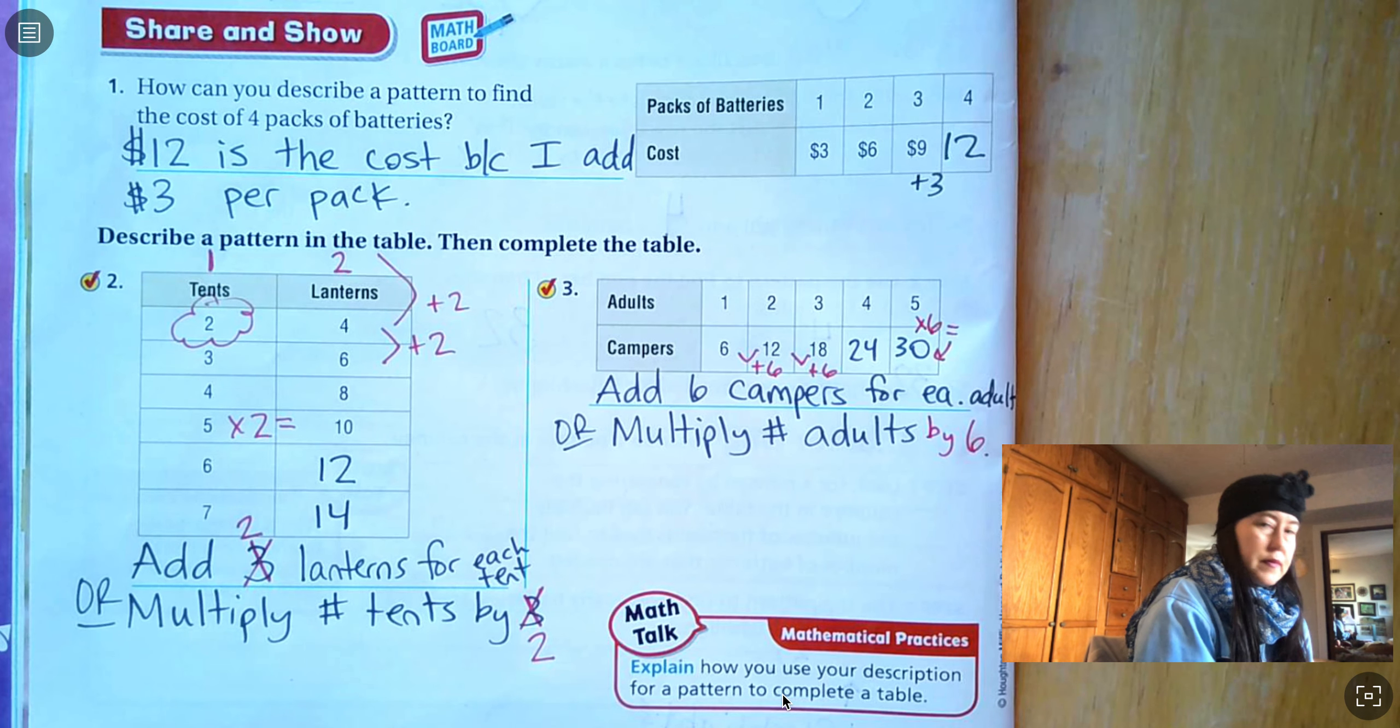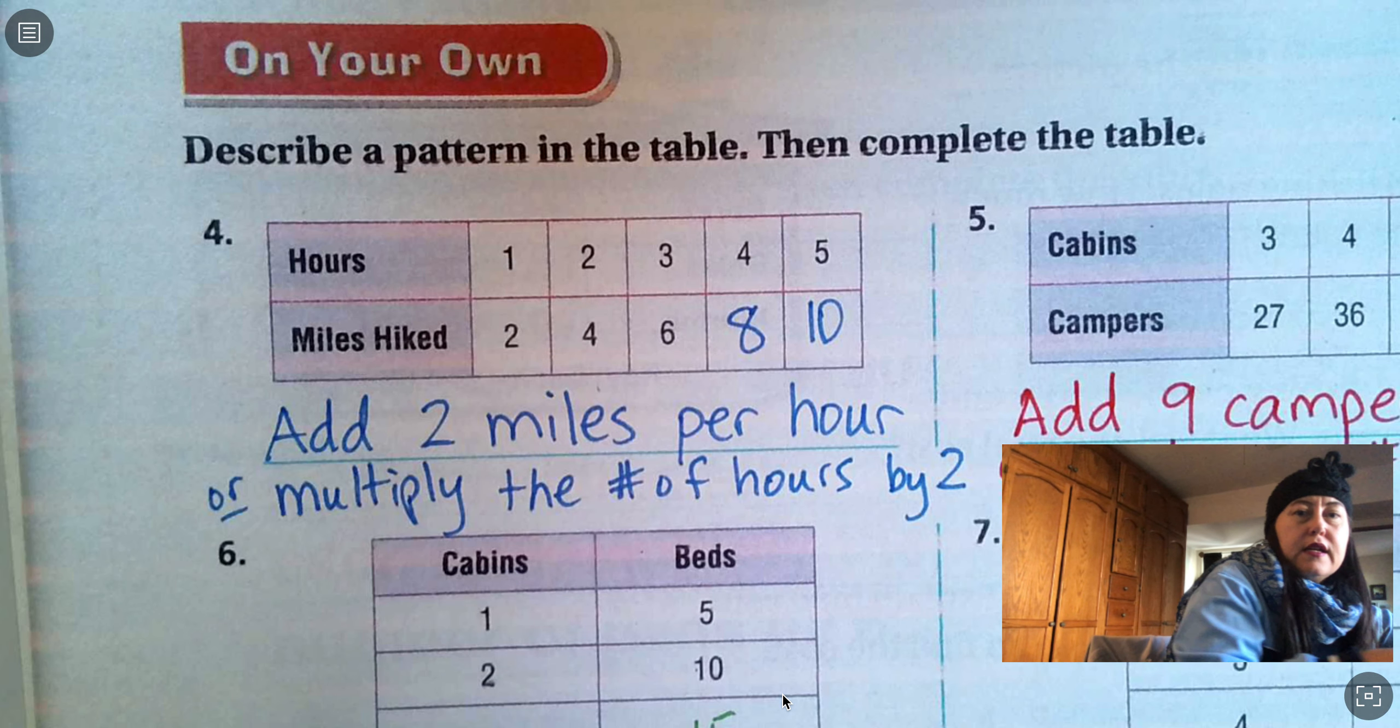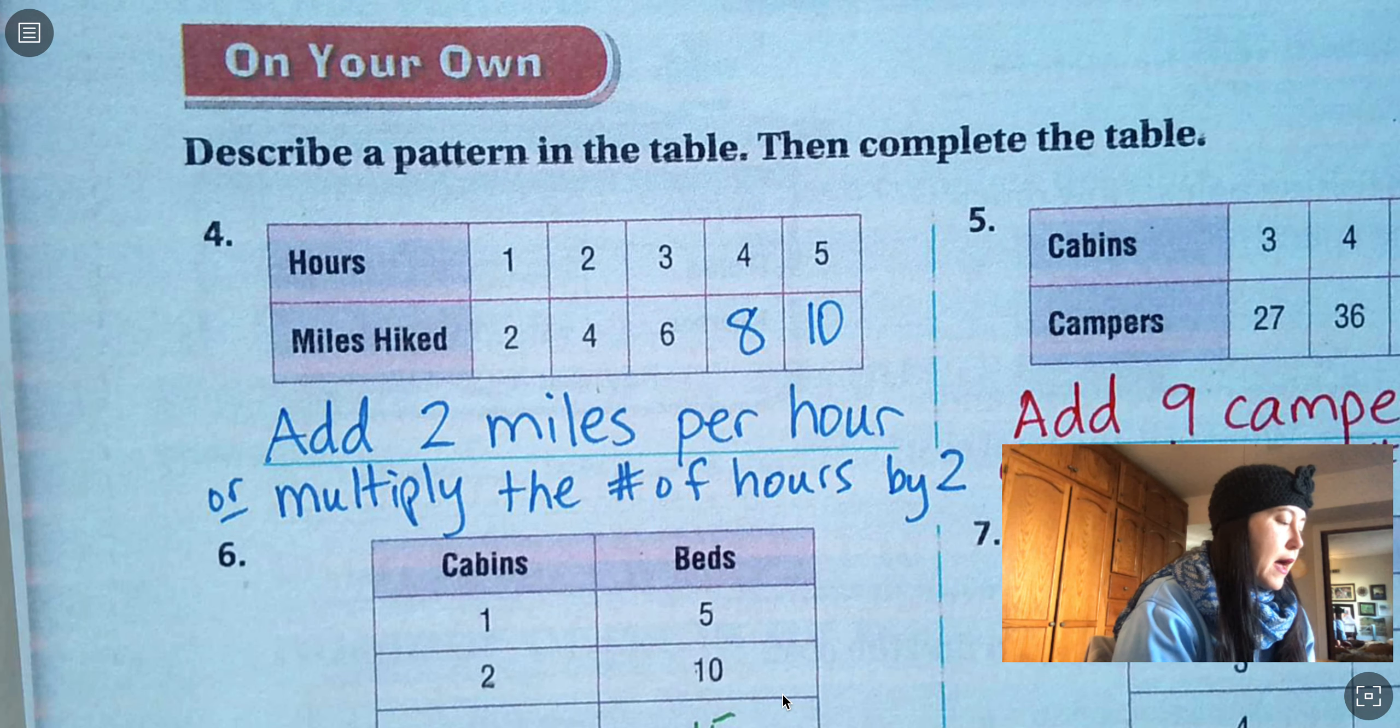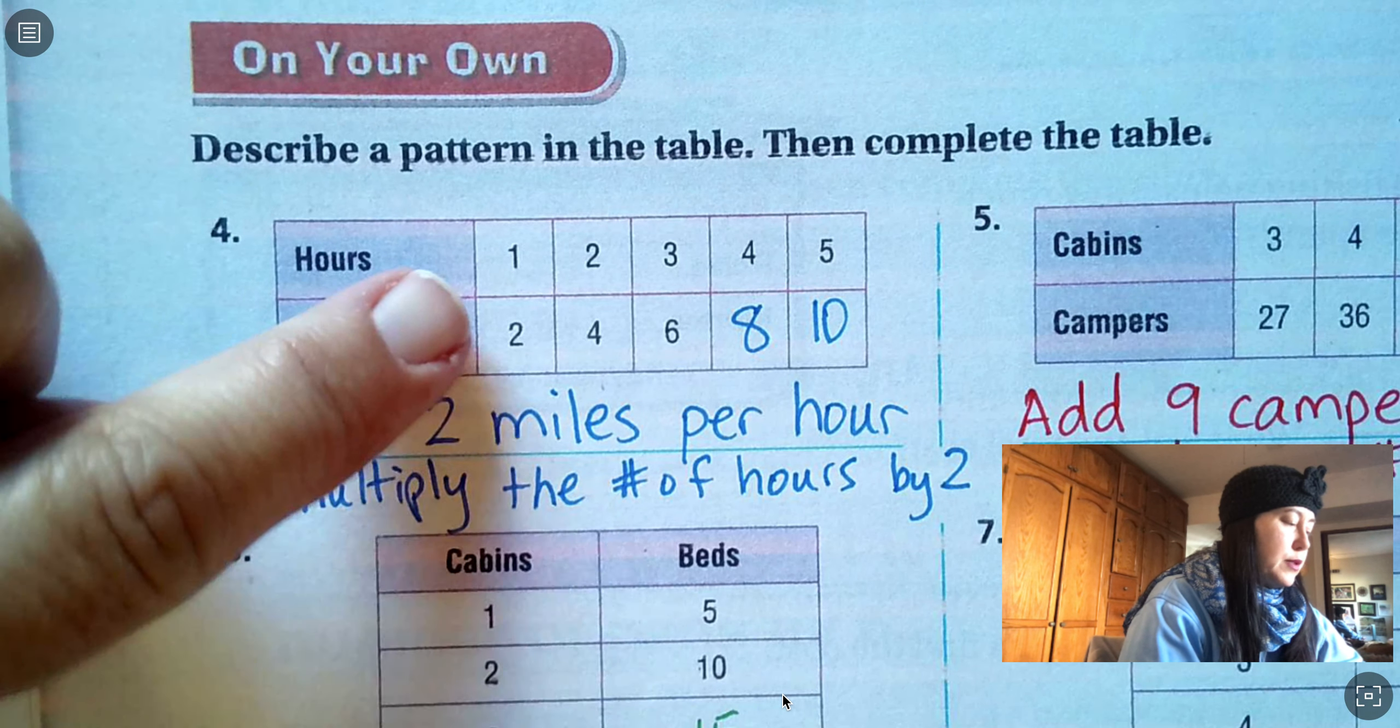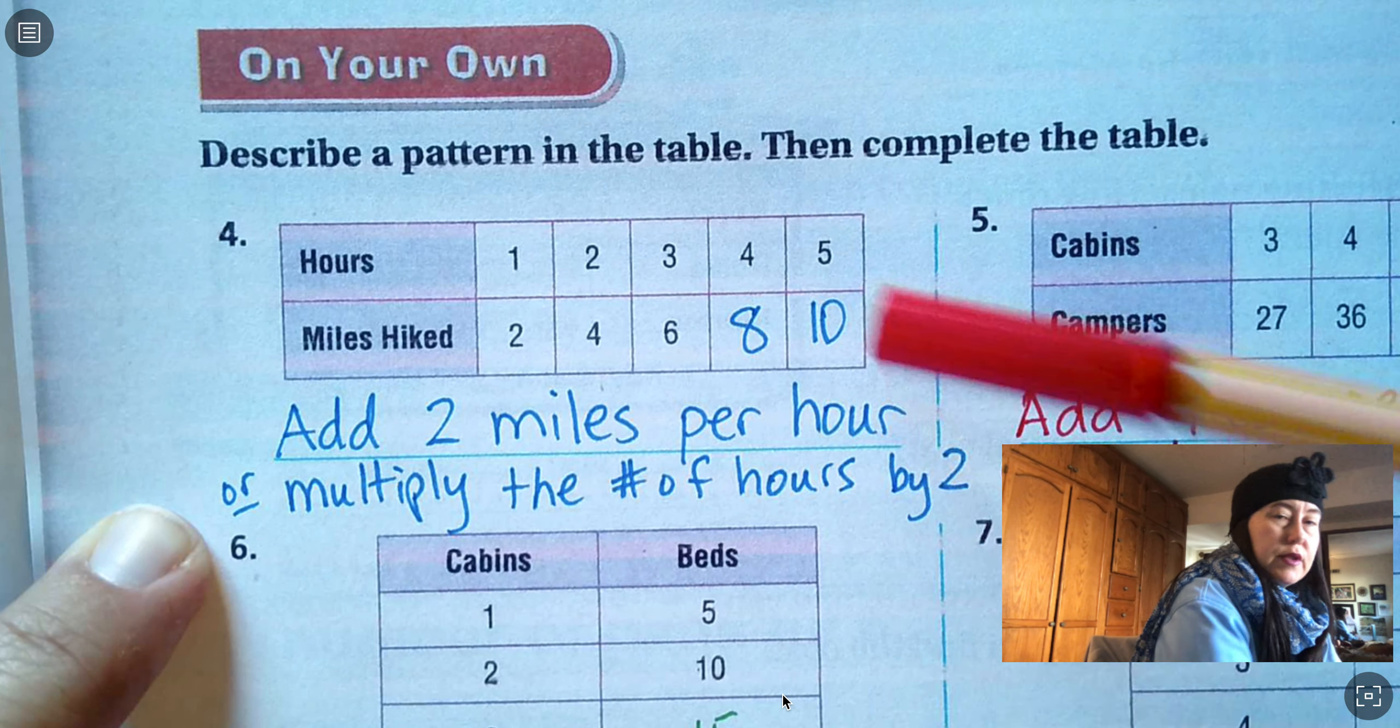Let's turn to page 191. I'm just going to highlight each one if you need to pause as you look. So you can see you're adding two miles per hour, right? Two plus two is four, four plus two is six. Or you could multiply the number of hours by two. So like four times two is eight, five times two is 10.